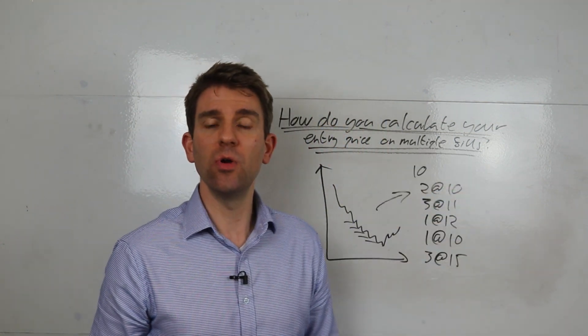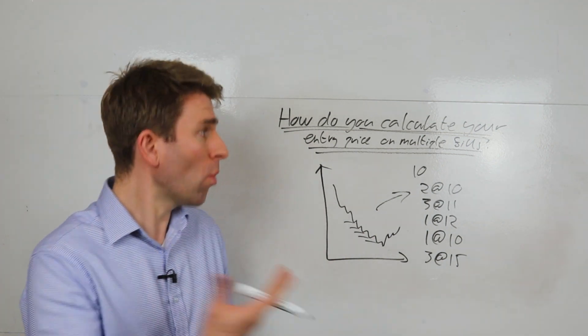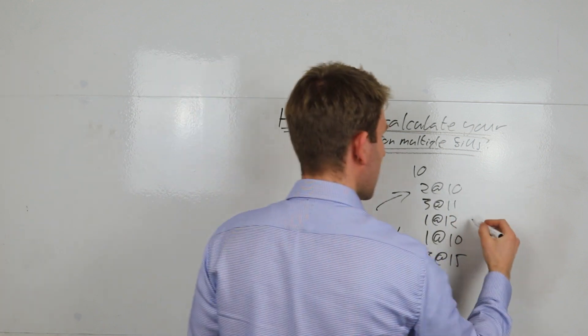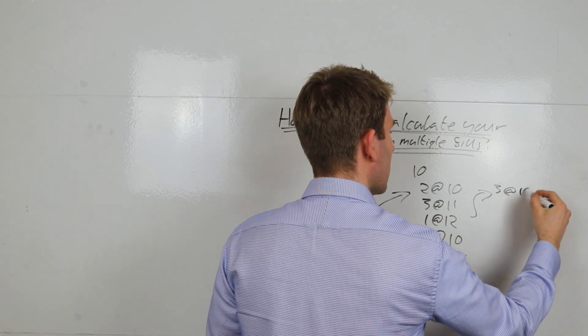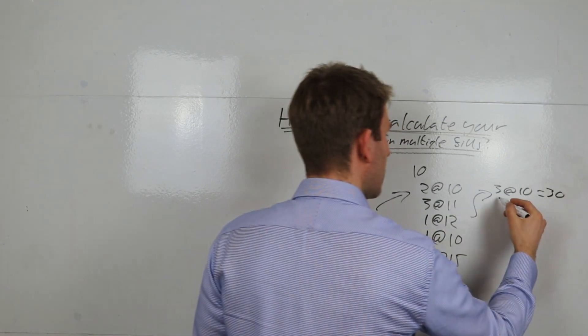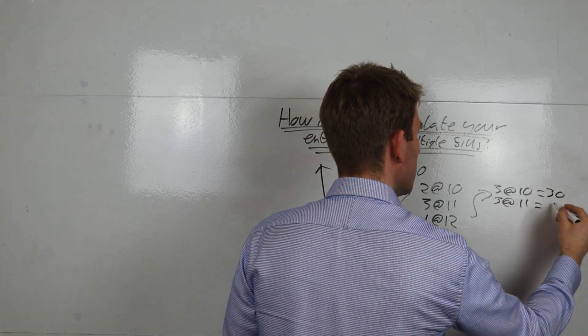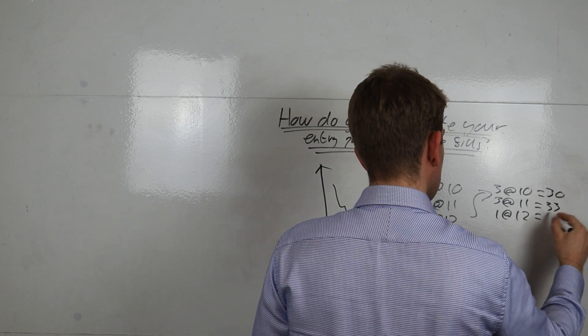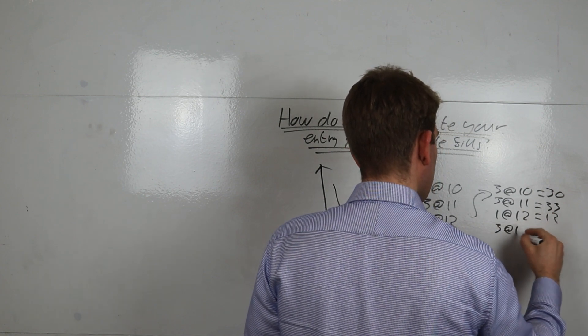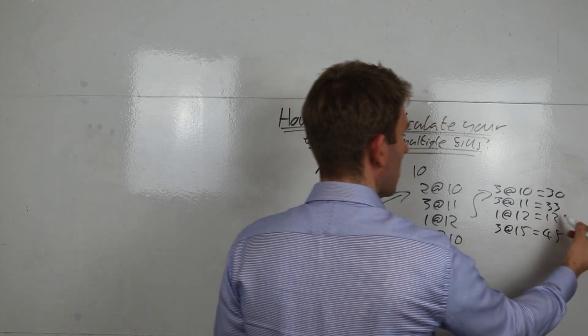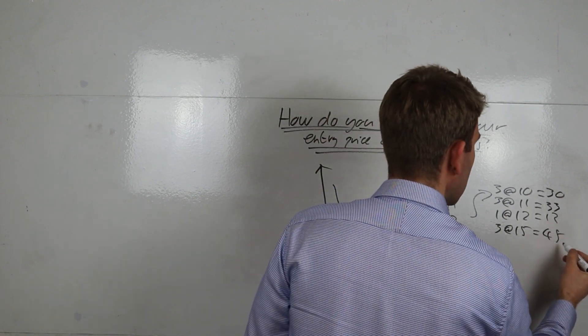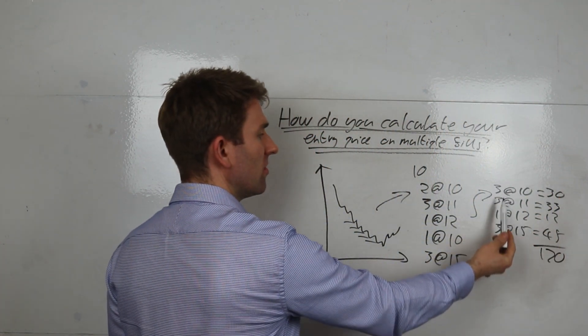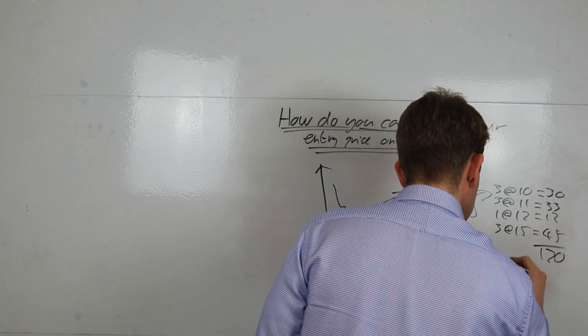So what do you do? How do you work out your average entry price? One way of doing it is to say okay well how many have I got in total? Well I've got three at ten and that's equal to thirty. And I've got three at eleven so that's equal to thirty-three. And I've got one at twelve which is equal to twelve. And I've got three at fifteen which is equal to forty-five. Thirty, thirty-three, twelve, forty-five is a hundred and twenty. And if I divide that by ten because that's my total, I know I've got ten lots, then my average is ten lots at an average of twelve.